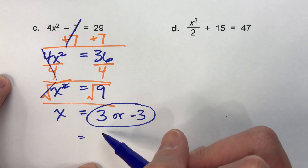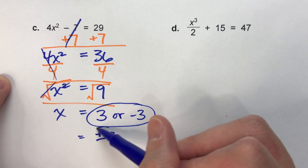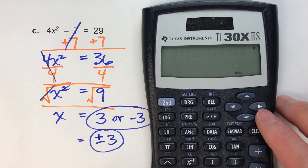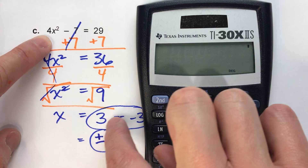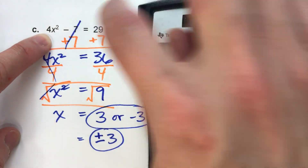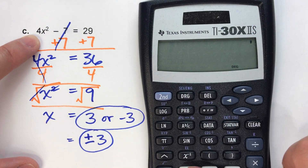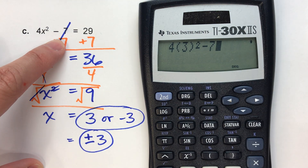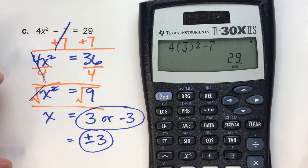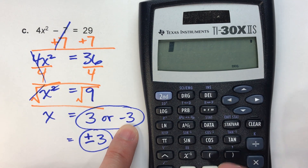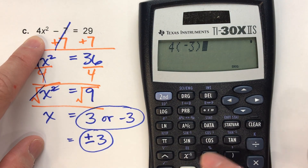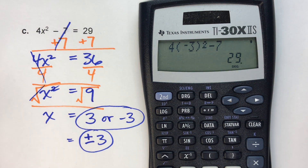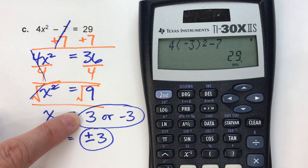You can write it as 3 or negative 3, or use the plus or minus 3 notation. Let's check both answers. We put 3 in first: 4 times 3 squared minus 7 should equal 29 — and it does. Now with negative 3: 4 times negative 3 squared minus 7 should equal 29 — and it does. So both answers are correct: 3 or negative 3.